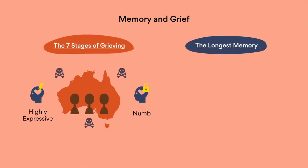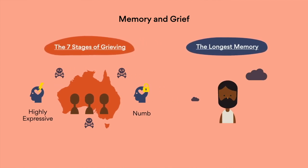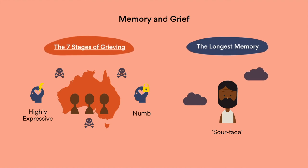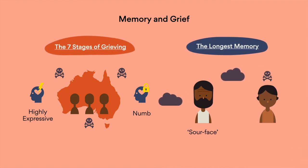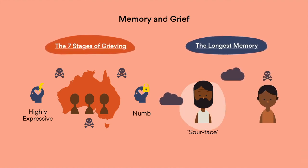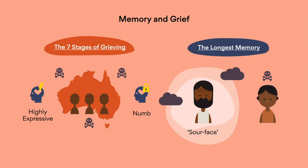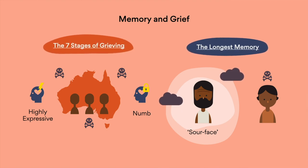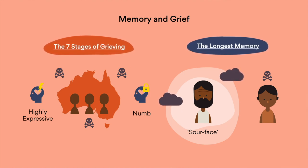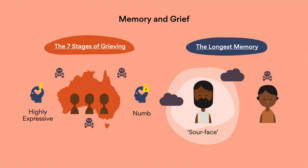In The Longest Memory, there's a physical dimension to Whitechapel's grief. He earns the nickname Sour Face because of the worry lines that developed after Chappel's death. He feels extremely guilty, and only after Chappel dies does he realise why Chappel disagreed with him so stubbornly in life — he actually learnt the tough lesson that he'd been hoping to teach Chappel.